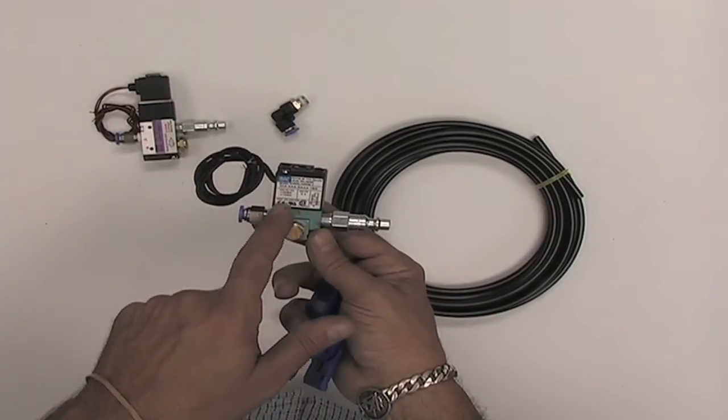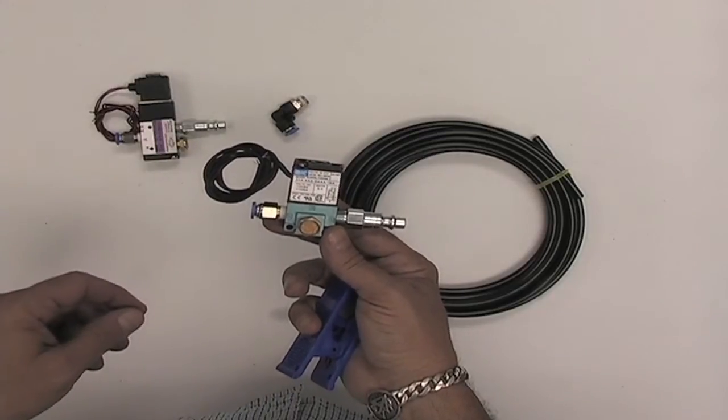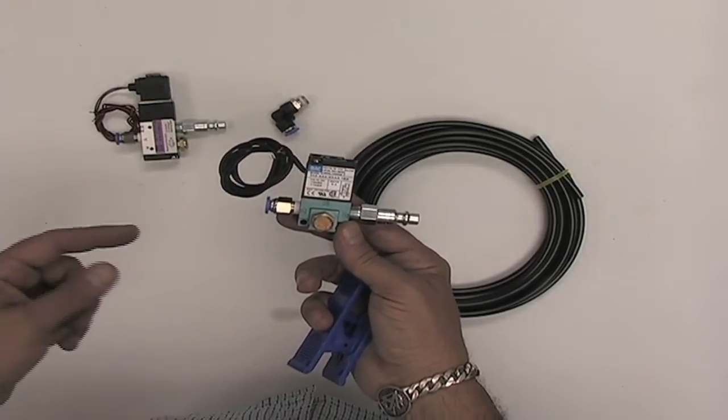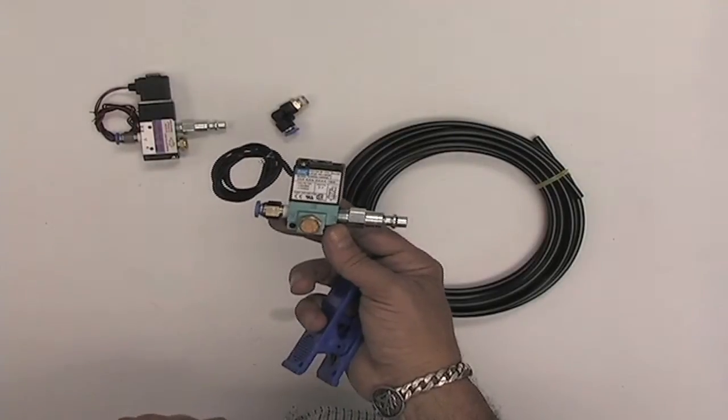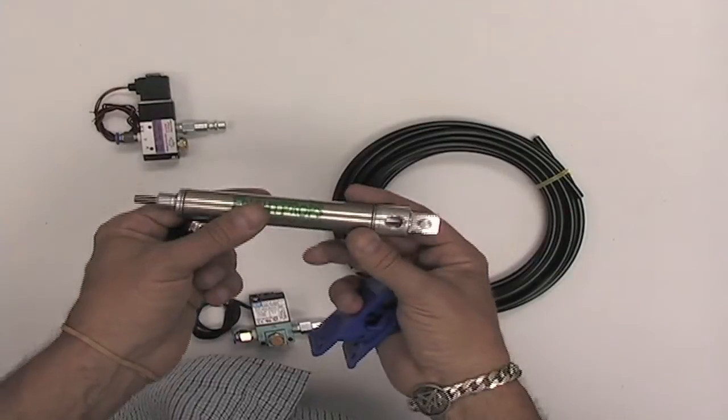When energized the valve opens up and lets air out through this port. When it's turned off the exhaust comes back through the exhaust port. You typically use three-way valves with single-acting cylinders.